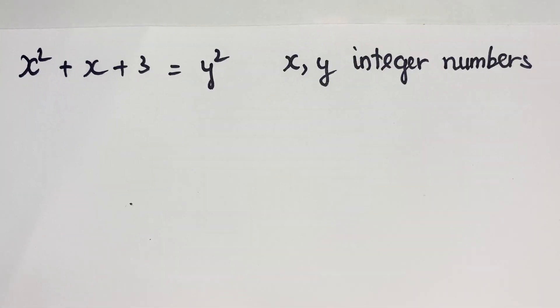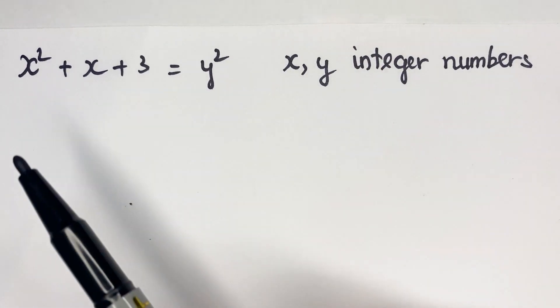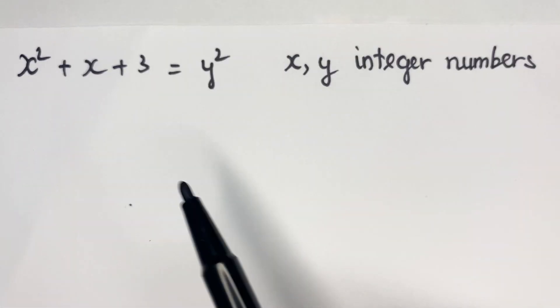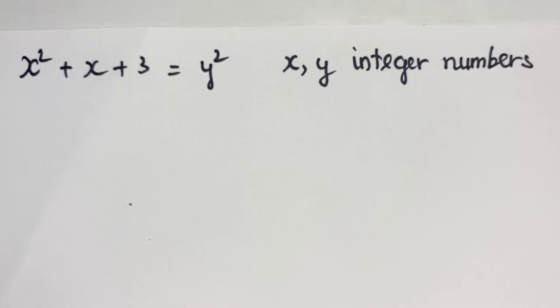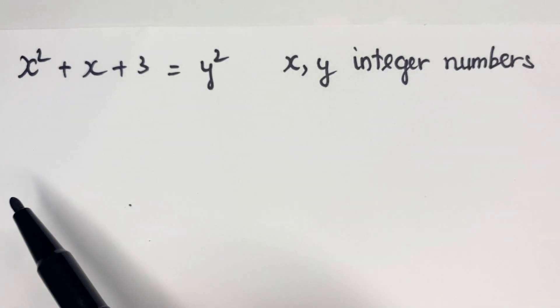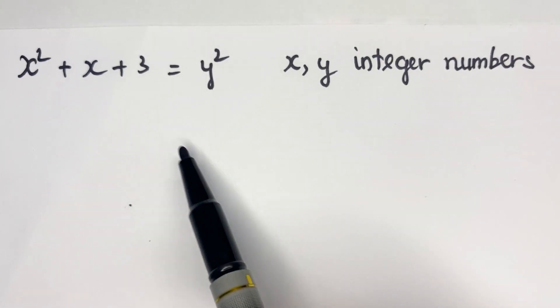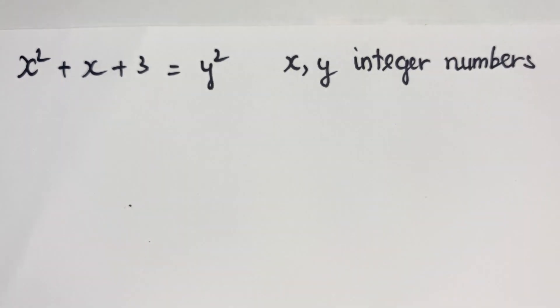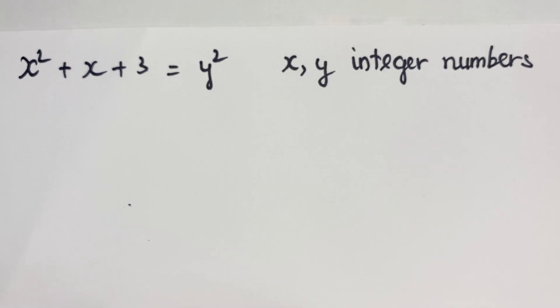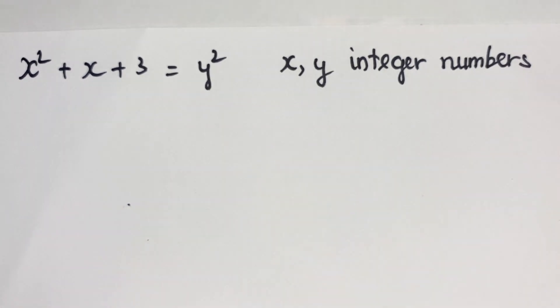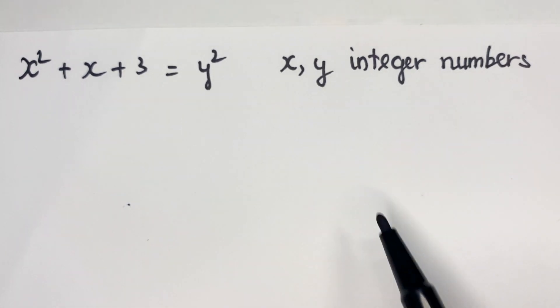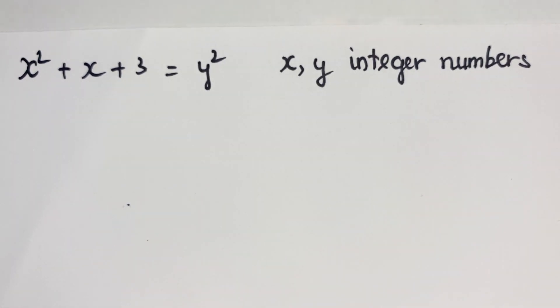Hello everyone. How to find the value of x and y in this equation? x squared plus x plus 3 equals y squared. In this case, x and y are integer numbers.